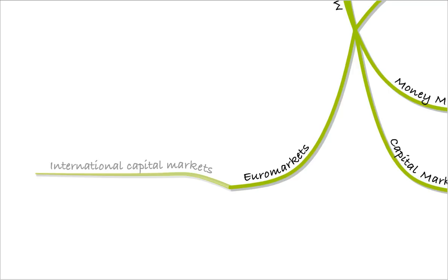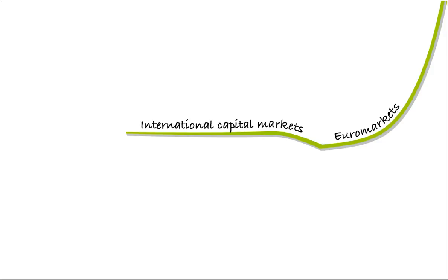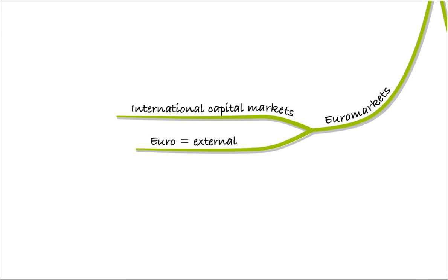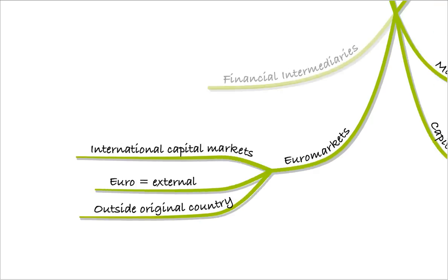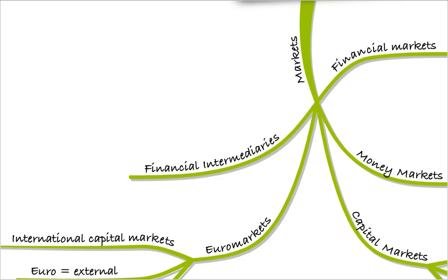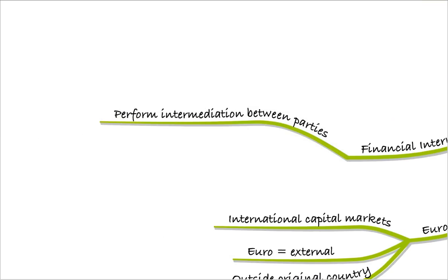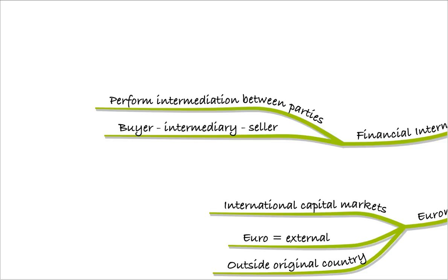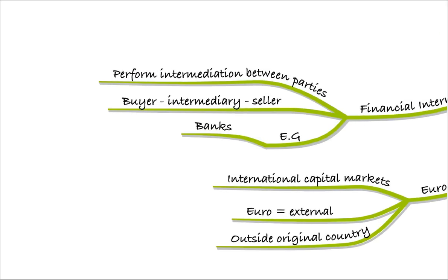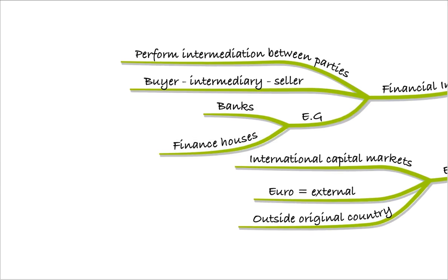Another term you need to be familiar with is euro markets — the international capital markets. 'Euro' really means external, so it refers to finance raised outside of the original country. Financial intermediaries are another key term: these perform intermediation between parties. In a transaction, you have the buyer and the seller, with an intermediary — like a bank or finance house — in between providing the finance.